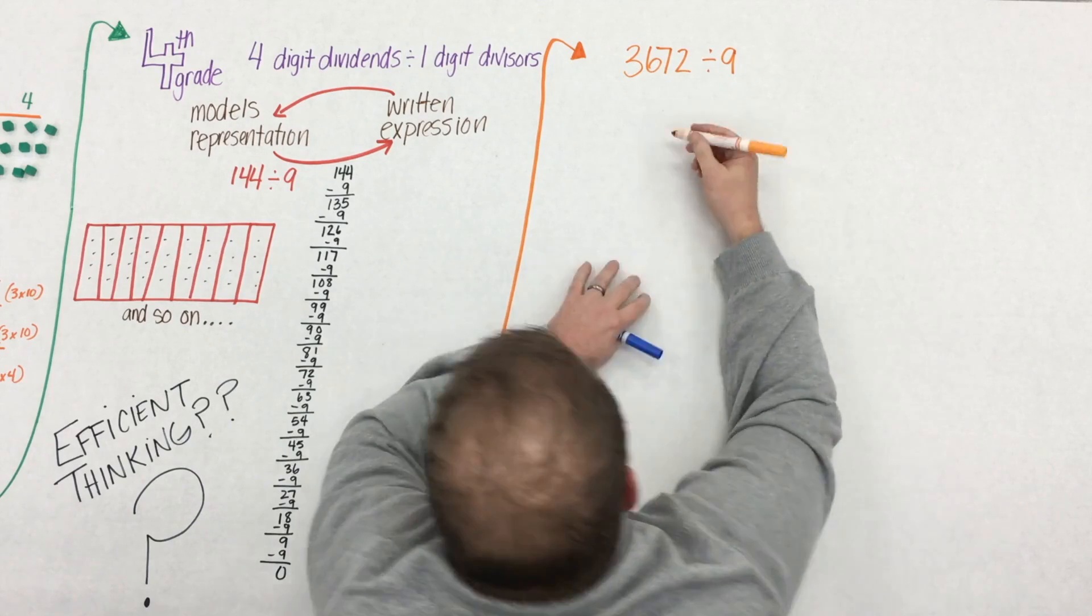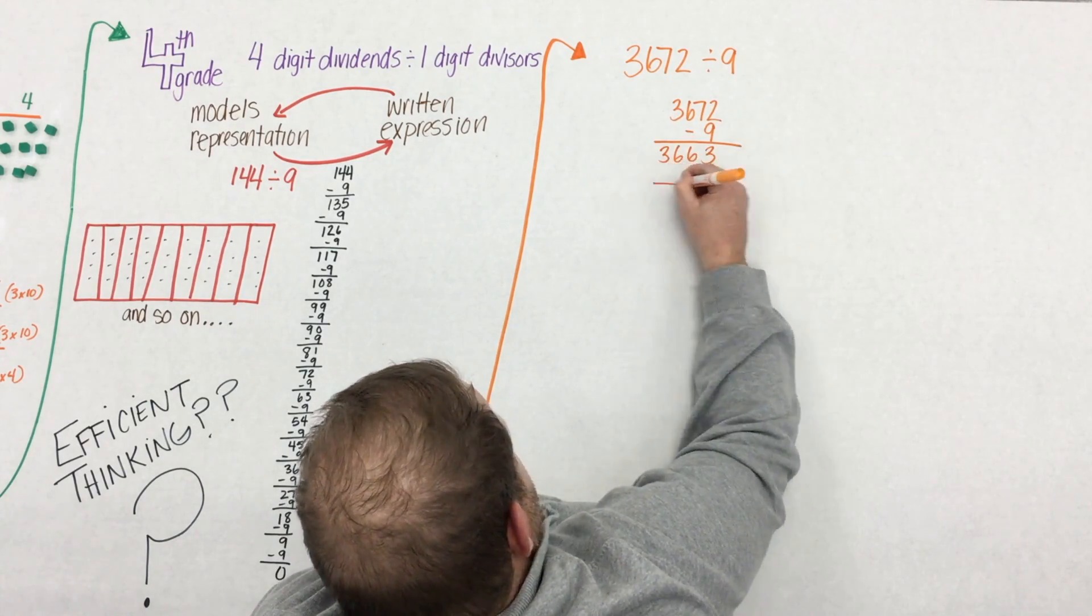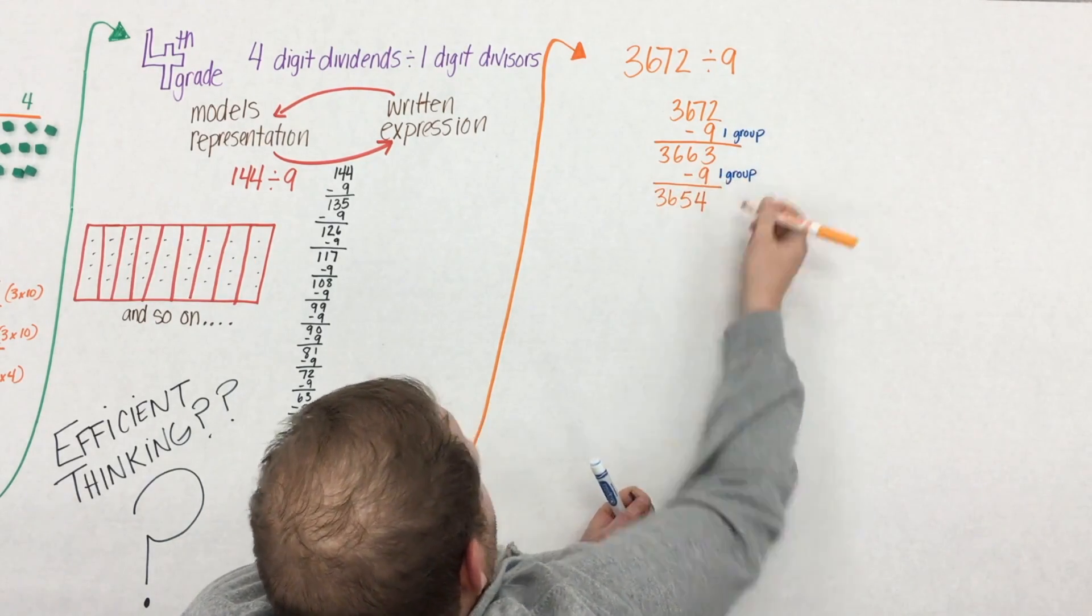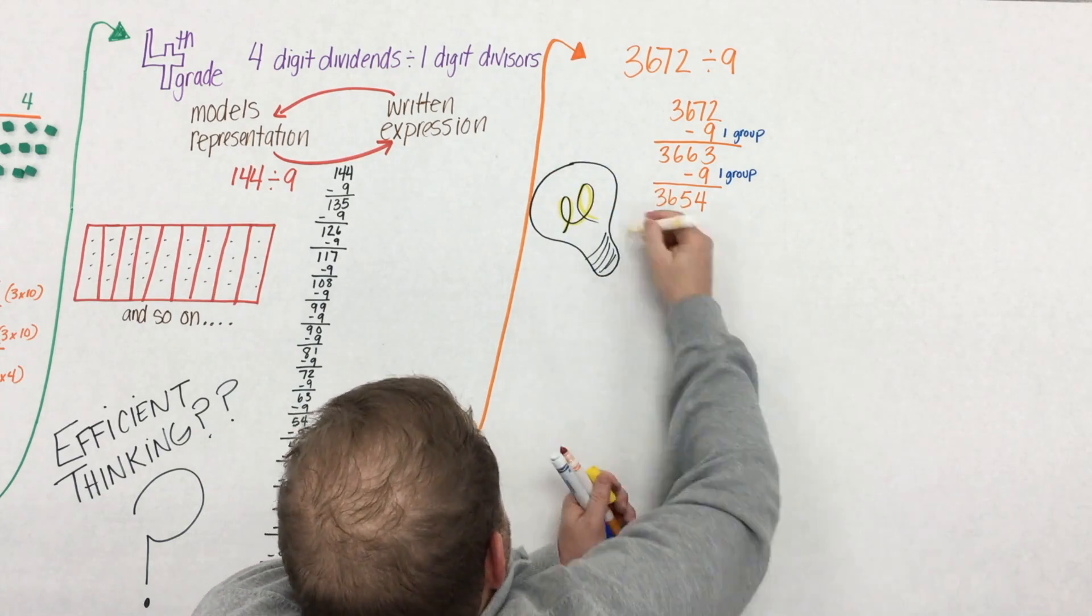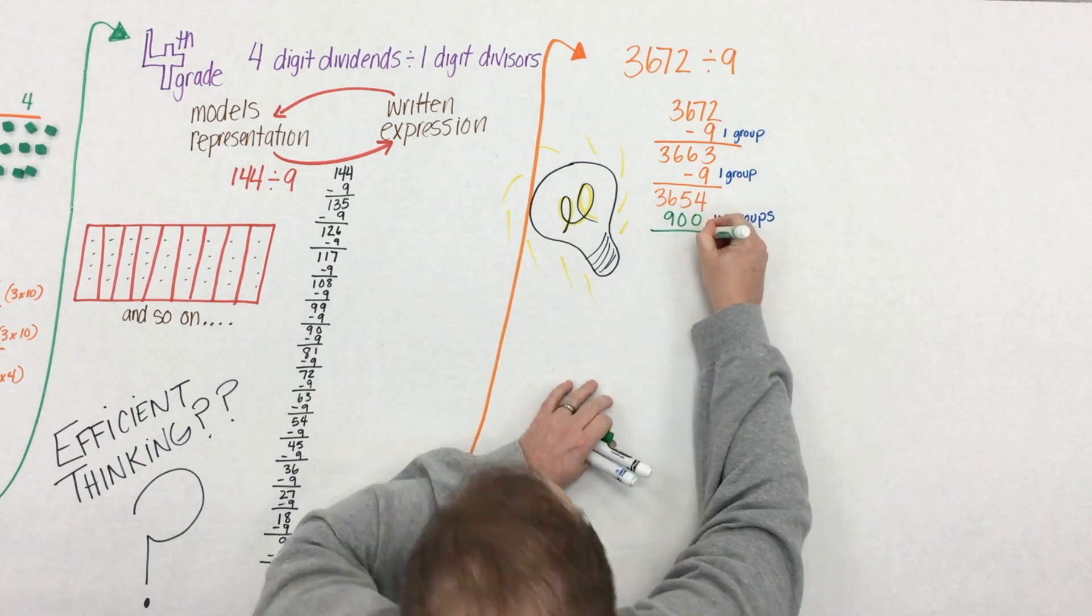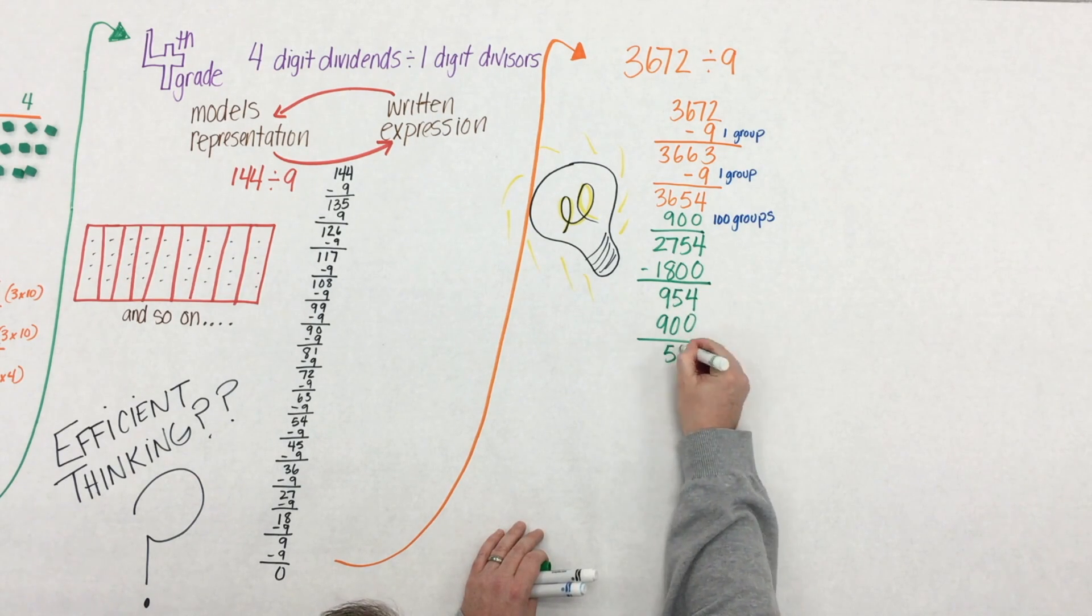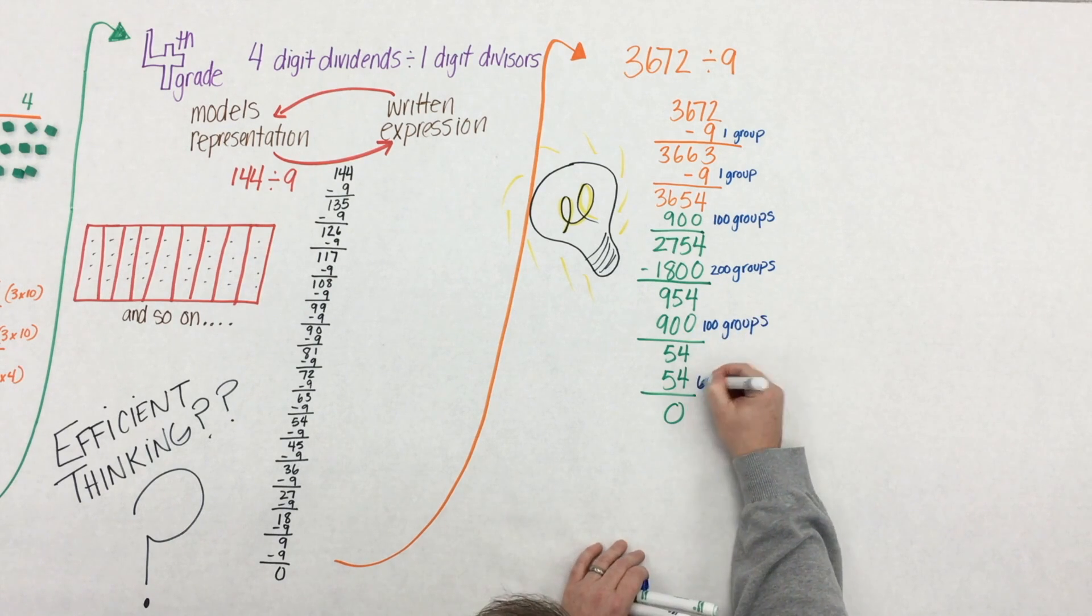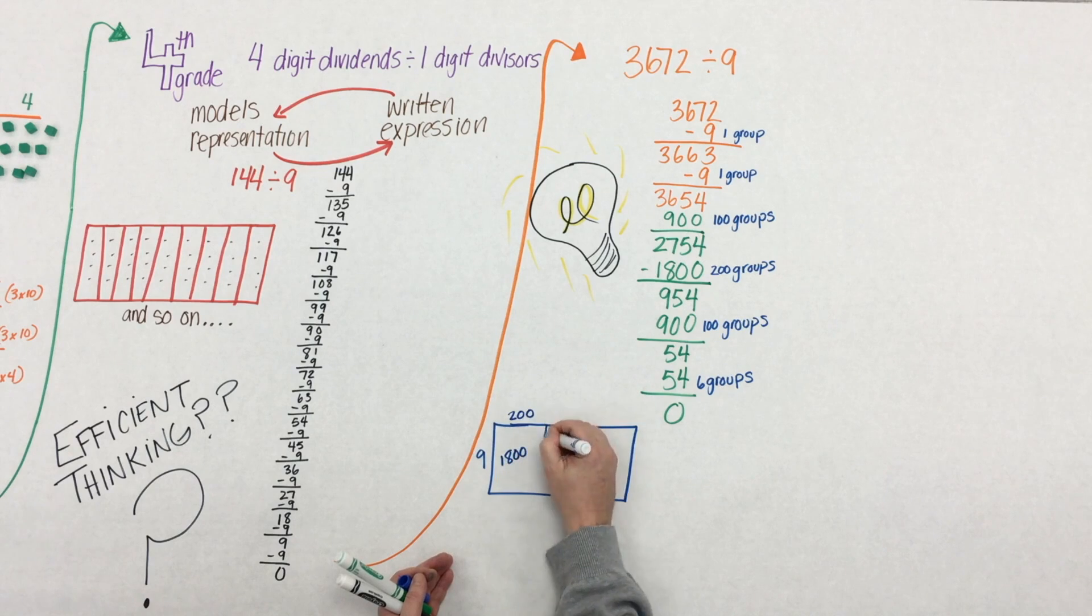So after students do the example of 144 divided by nine, we might throw them in a place with this number, where the dividend is 3,672. Well, they start removing groups of nine, and immediately they say, oh, wow, I'm going to be here forever. This is going to take the longest time. Can I take out a group of 100? Sure you can. You can take out whatever groups you want. So they can take out a group of 100, a group of 200, and then another group of 100 nines, and then a group of six nines.